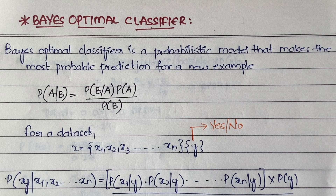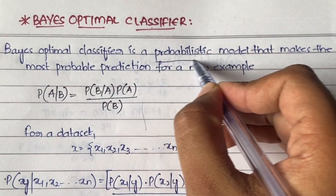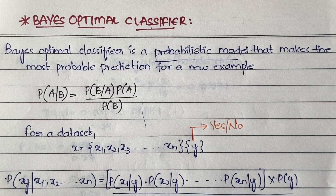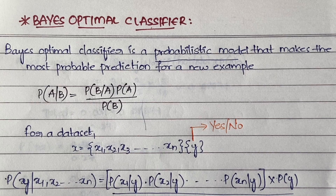So first, what is Bayes Optimal Classifier? The Bayes Optimal Classifier is a probabilistic model — you need to understand this word 'probabilistic model' — that makes the most probable prediction for a new example. Whenever you get a new example, it will make the most probable, most efficient prediction. I'll explain with an example so you can understand it better.